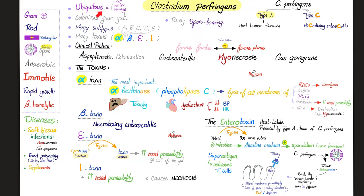Clostridium perfringens is everywhere around you; it can colonize you. It's a gram-positive rectangular rod, can make spores although rarely, anaerobic, non-motile, rapidly growing, and beta-hemolytic.